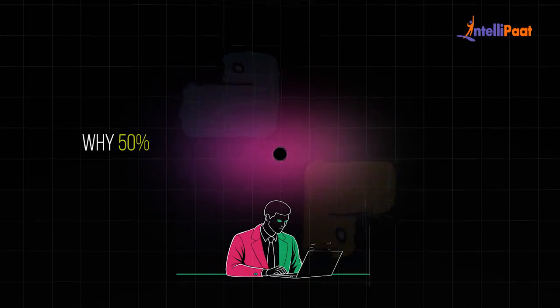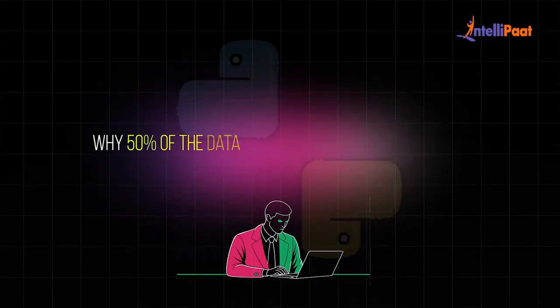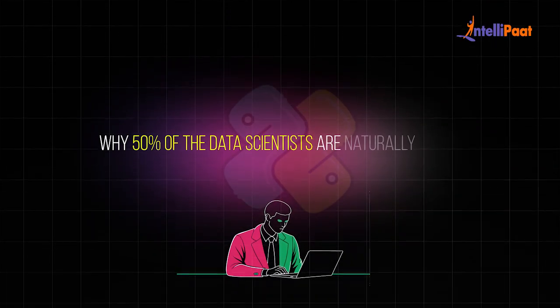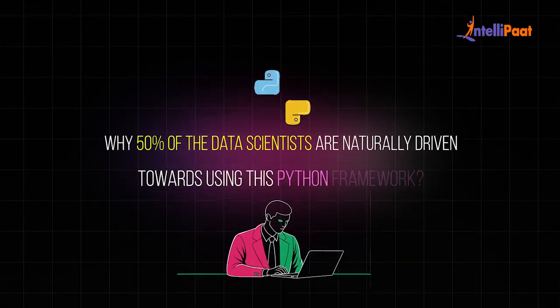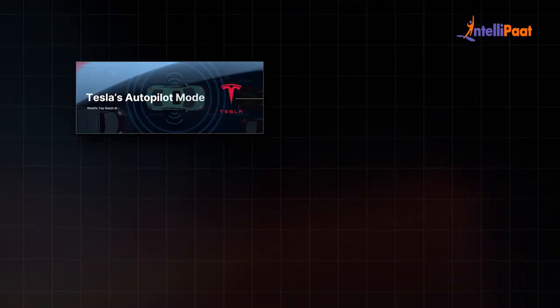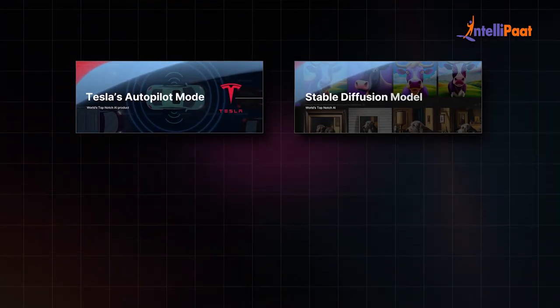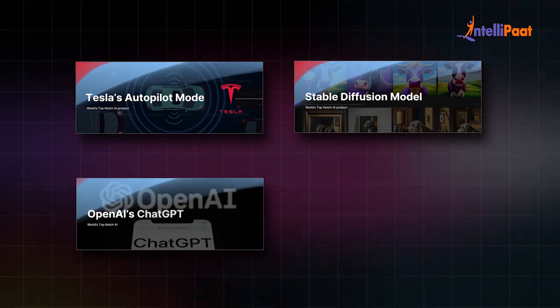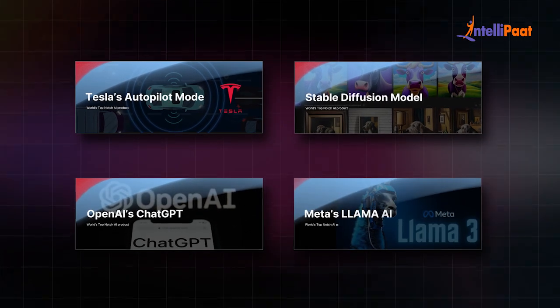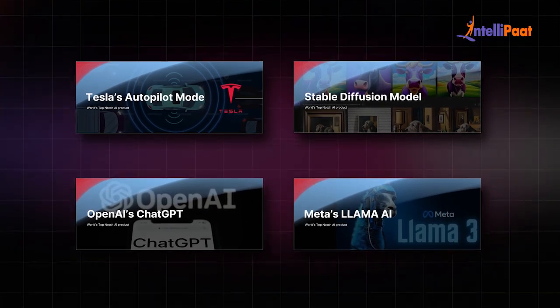What is PyTorch and why 50% of the data scientists are naturally driven towards using this Python framework? This framework is used to develop world's top-notch AI products like Tesla's Autopilot Mode, Stable Diffusion Model, OpenAI's ChatGPT, Meta's Llama AI, and many more.